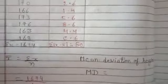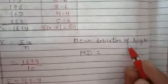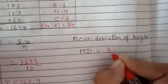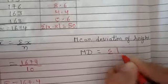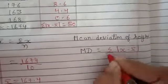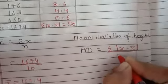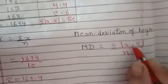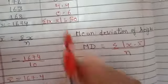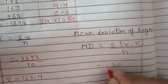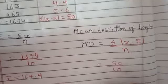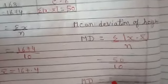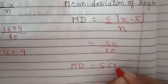Now I will put the values into the mean deviation formula: MD = sigma|x minus x-bar| upon n = 50 upon 10. Therefore, mean deviation is 5 centimetres.